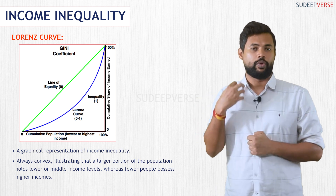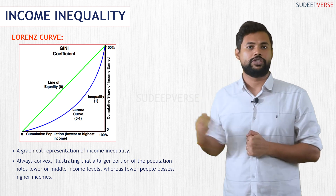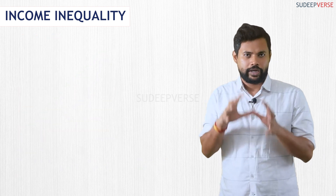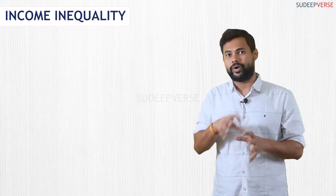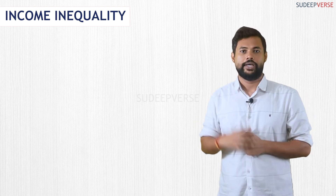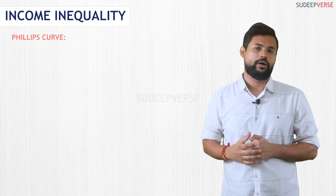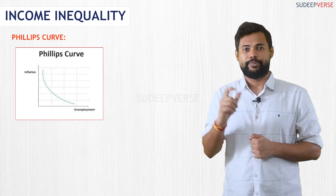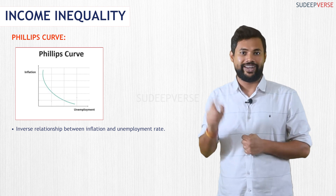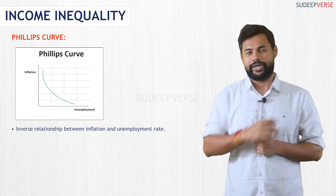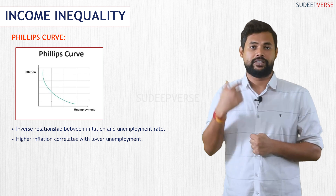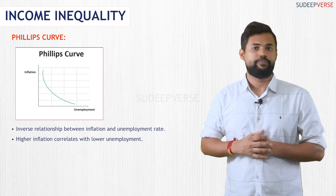I hope you understood what is the Gini coefficient and the Lorenz curve. Now let me also give a brief idea about different curves that come across your economy syllabus. The next curve you should know is the Phillips curve, which is a graphical representation of the inverse relationship between inflation and unemployment rate. Higher the inflation, lower will be the unemployment rate — that is the graphical representation of the Phillips curve.